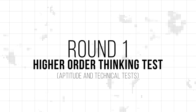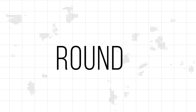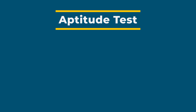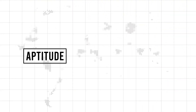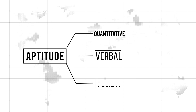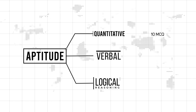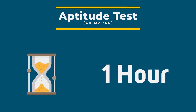Round 1 is the Higher Order Thinking Test. This test has three segments: an aptitude test, a branch-specific technical test, and a cross-domain technical test. The aptitude test judges the ability of the participant to solve problems in quantitative, verbal, and logical reasoning categories. Each category has 10 MCQ problems, making 30 problems in all, to be solved in one hour.